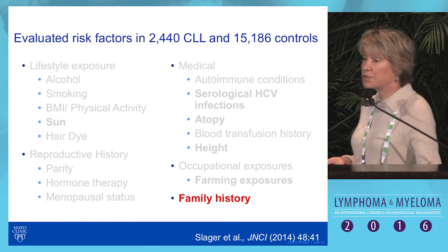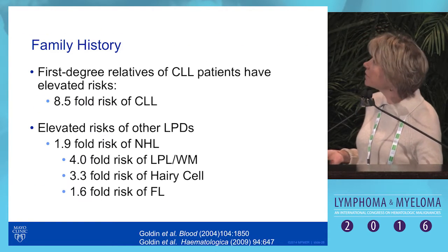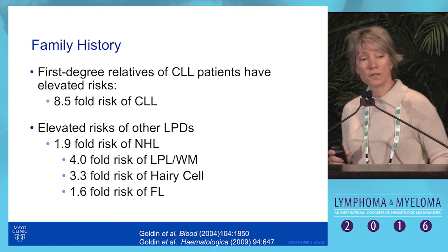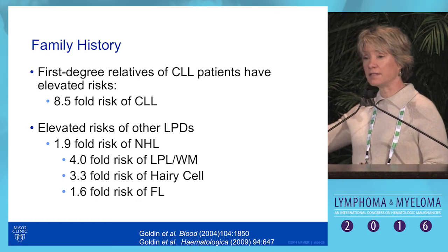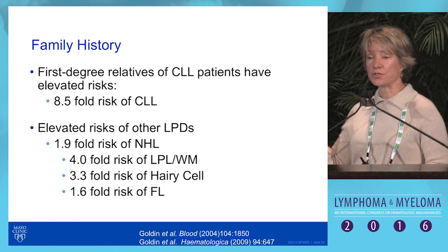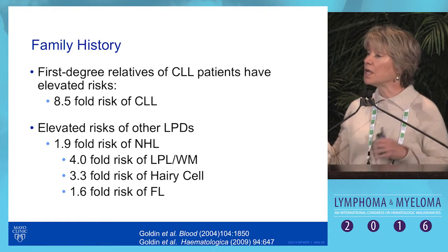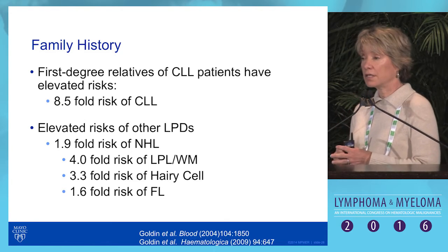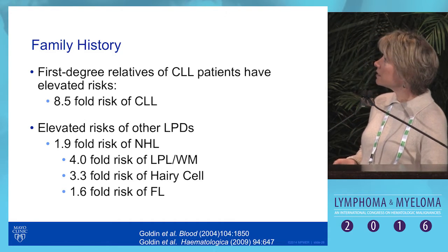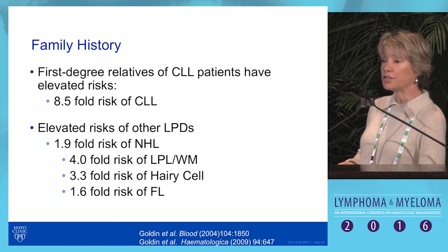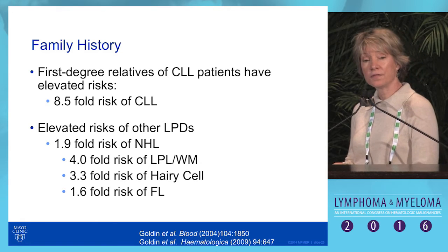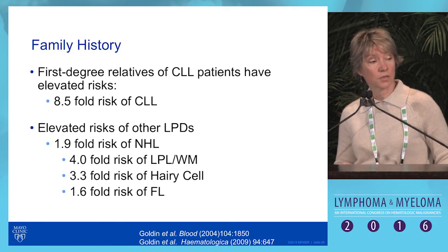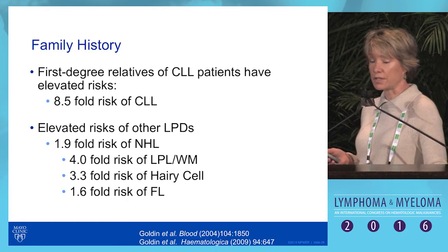Last but not least, family history is a strong risk factor for CLL. My colleague Lynn Golden conducted a study using the Swedish cancer registry linked with Sweden's national family registry. They found that having a first-degree relative with CLL confers an 8.5-fold increased risk of CLL — one of the strongest risk factors identified. They also found almost a 2-fold increased risk of non-Hodgkin's lymphoma associated with first-degree relatives.